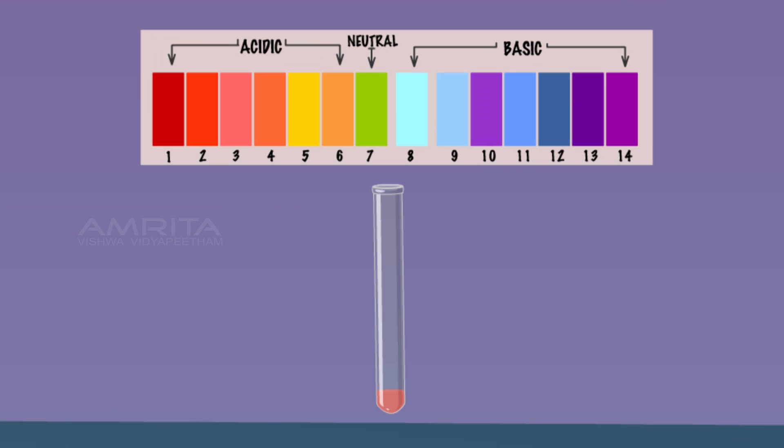Compare the color produced in the test tube with the standard color pH chart and note down the pH from the color chart. The pH of acetic acid is 3.